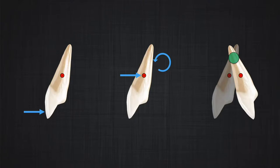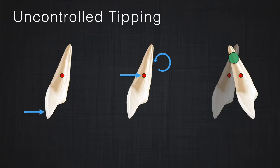Now there are two components for the movement of the tooth. One is displacement, and one is huge rotation. A combination of that would be uncontrolled tipping. What that means is the apex goes one direction, the crown goes another direction, almost like a central rotation is somewhere between the center of resistance and the apex of the tooth.